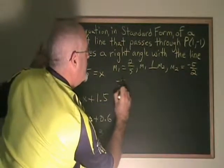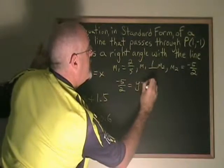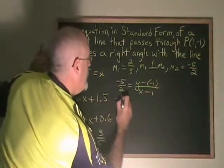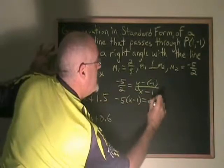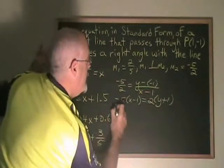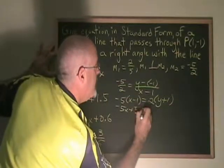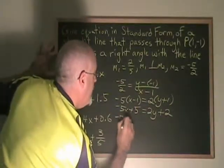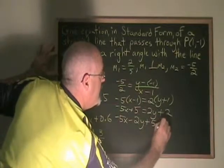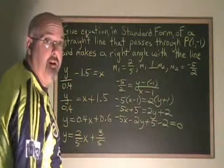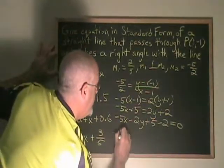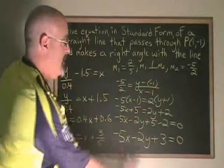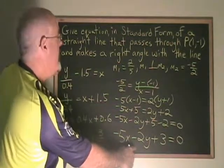Negative 5/2 equals y minus negative 1 over x minus 1. Cross multiplying, negative 5 times x minus 1 equals 2 times y plus 1. This gives negative 5x plus 5 equals 2y plus 2. Getting everything to the left side, negative 5x minus 2y plus 5 minus 2 equals 0. Combining the similar terms, negative 5x minus 2y plus 3 equals 0 is the equation of the straight line that is perpendicular and makes a right angle with this line.